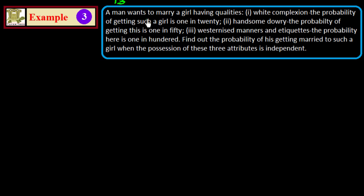I explain the Multiplication Theorem with a worked example. A man wants to marry a girl having the following qualities: number one, white complexion — the probability of getting such a girl is 1 in 20; handsome dowry — the probability is 1 in 50; and westernized manners and etiquette — the probability is 1 in 100. Find the probability of getting married to such a girl when the possession of these three attributes is independent.